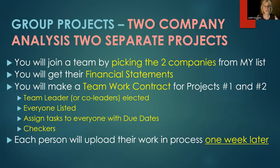In a few weeks, you'll be assigned or pick your companies and get their financial statements. Then we'll take a little break from the term projects and do the mini Monopoly assignment, where you'll play Monopoly and create financial statements from your results — a smaller project, about three to four hours max. Then you'll come back to the team project, work with your team, and make a work contract covering projects one and two. You'll pick a team leader or co-leaders, everyone will be listed, tasks will be assigned with due dates, including the task of auditing or checking someone else's work. One week later, each person on the team will upload their working process.